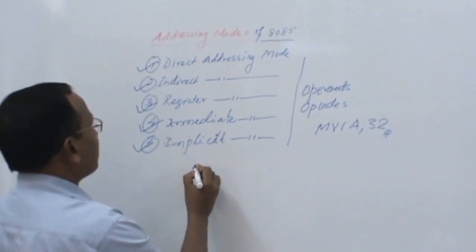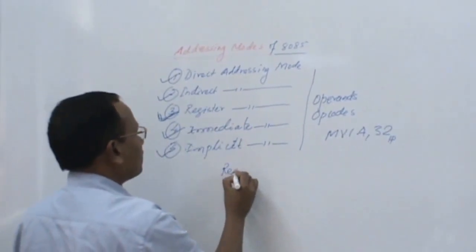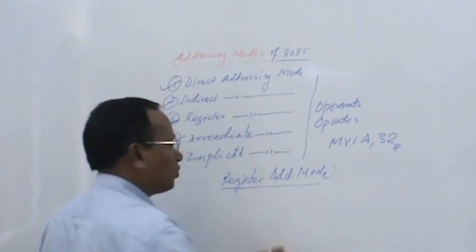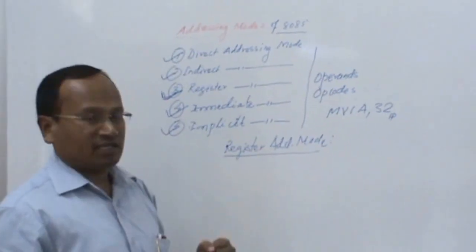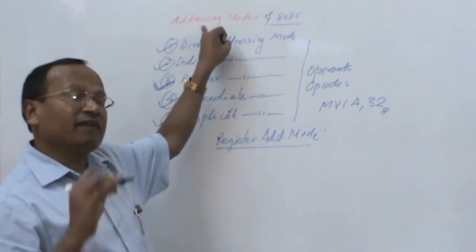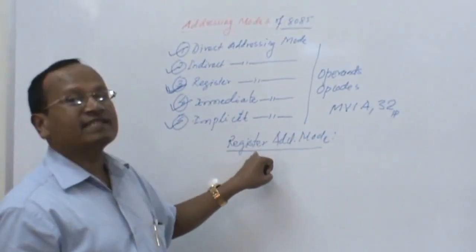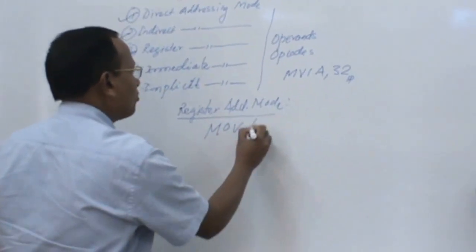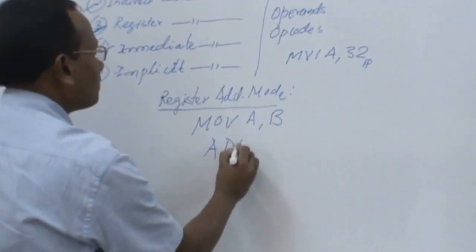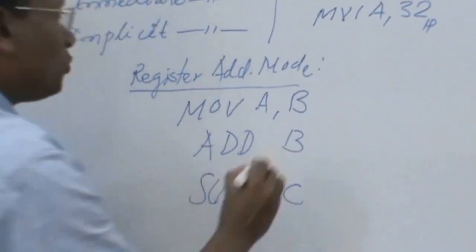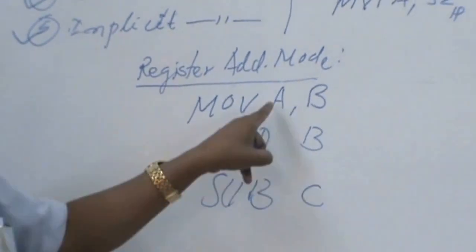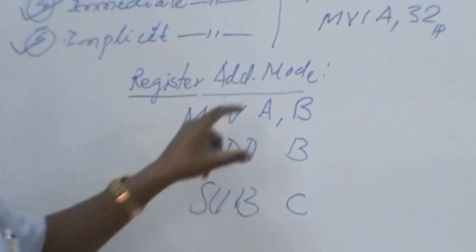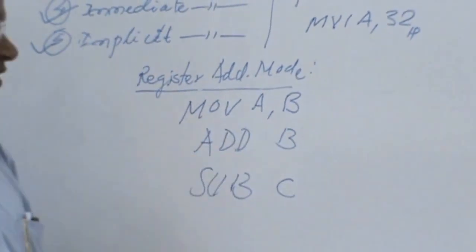Let us start with register addressing mode, so that we can easily understand what addressing mode actually is. As we defined, addressing mode is the different way in which an operand is specified. In register addressing mode, the operands are registers. For example, the instructions MOV B A, ADD B, and SUB C — all the operands in these three instructions are registers A, B, and C. Therefore, these instructions use register addressing mode.